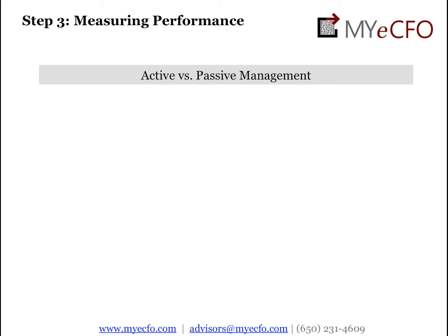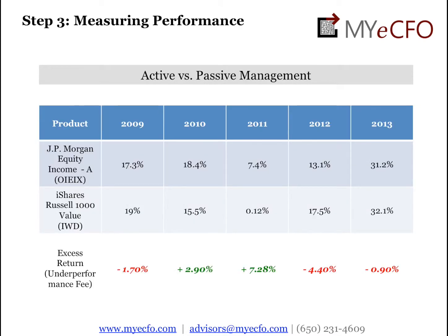So I want to illustrate this conceptually and give an example using active versus passive management. You have two choices. You invest in JP Morgan Equity Income, which is a team run by JP Morgan folks that is trying to select the best U.S. large cap value stocks. Here is the return of that mutual fund after fees over various time frames.